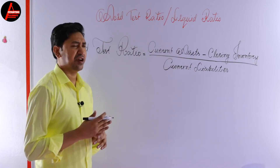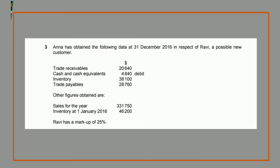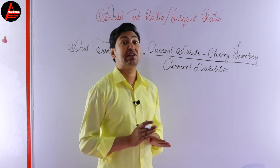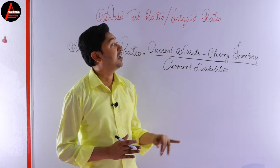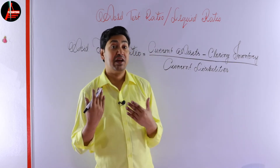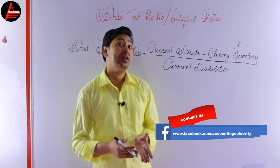Now, what are our current assets in the question? Have a look at the question once again. We have trade receivables — it is a current asset. We have cash and cash equivalents — it is a current asset. Inventory is there — it is also a current asset. Notice that in the question there are two inventories: inventory at 1st January 2016 of $46,200. Please do not take opening inventory; you must take only closing inventory when you calculate your current ratio, working capital, or acid test ratio.